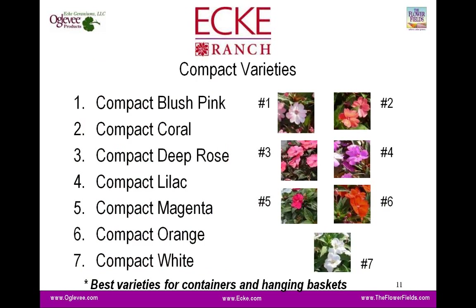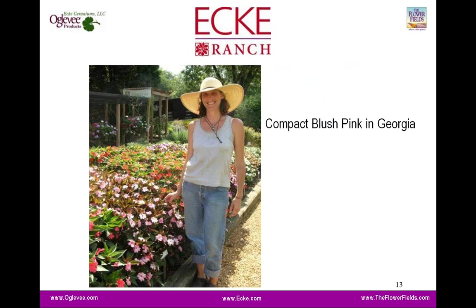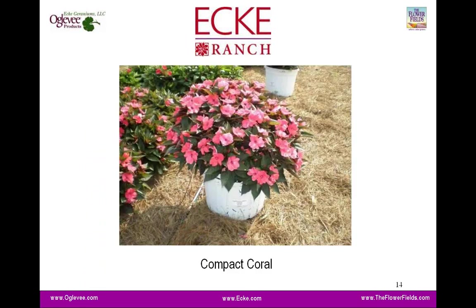Then we have the compact varieties — the newer varieties added to the SunPatiens line with new breeding work from Cicada. Within that line we have compact blush pink, compact coral, compact deep rose, lilac, magenta, orange, and white. The compact varieties are best for smaller containers like gallons and hanging baskets, but they do have some landscape application as well. In this picture of Jenny in Georgia, the compacts are coming up to about mid-thigh on her — that's compact blush pink. Typically the final finish potential in the landscape is about the same as the vigorous; it just takes the compacts a couple more weeks to get there.